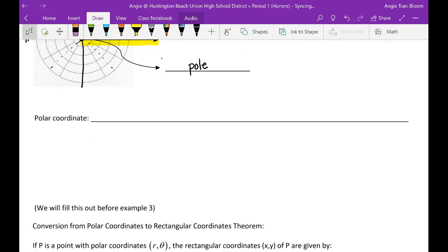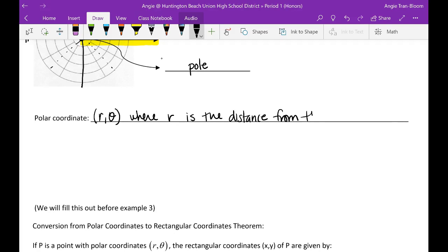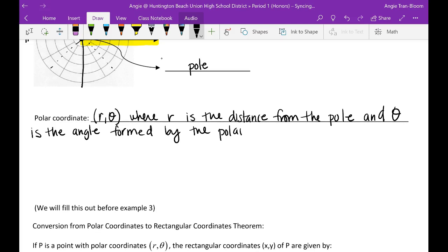So what is a polar coordinate? Polar coordinate we are going to use r comma θ, where r is the distance from the pole, and θ is the angle formed by the polar axis.